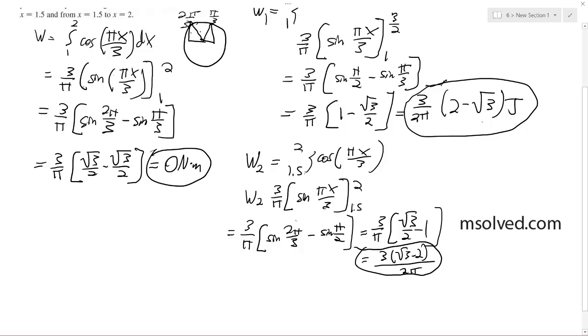When you add both these up together because we divvied them up, work one plus work two is equal to 3 over 2 pi times 2 minus square root of 3 plus 3 over 2 pi square root of 3 minus 2, which ends up being zero Joules.